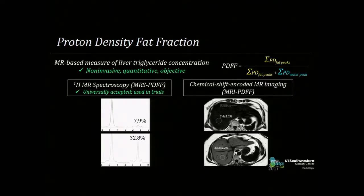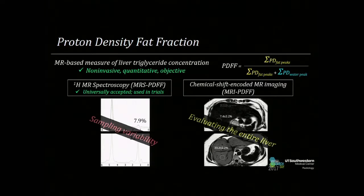The second flavor, MR-based proton density fat fraction, is based on chemical shift-encoded MR imaging — MRI-PDFF. This provides a pixel-by-pixel PDFF map of the entire liver. One of the drawbacks of MR spectroscopy is sampling variability, and the fact that you can evaluate the entire liver by MRI-PDFF makes it an attractive option, especially for long-term follow-up in various patients.